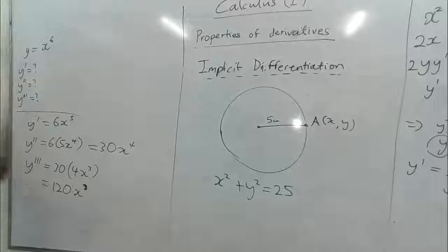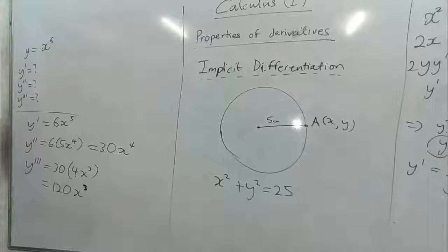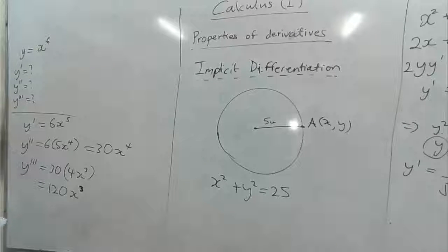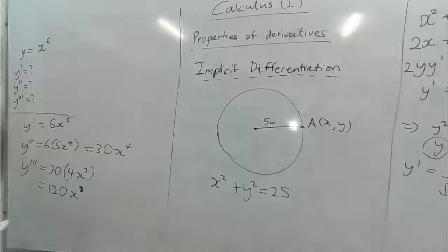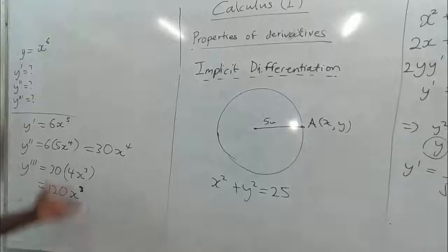So if we want to get the fourth derivative, we differentiate the third derivative in that order, so this is what we call the higher forms of derivatives. So it is kind of simple there.